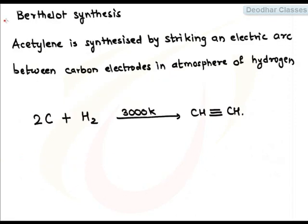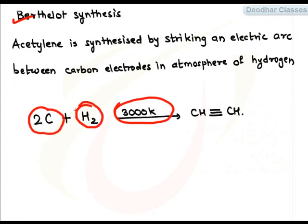Acetylene can be also obtained by Barthelot synthesis. Actually, this is step 1 of Barthelot synthesis. First, in Barthelot synthesis, an electric arc is struck between two graphite rods which are placed in the atmosphere of hydrogen. Carbon will react with hydrogen at very high temperature of 3000 Kelvin to form acetylene. And then this acetylene will undergo cyclic trimerization to form benzene. This is the complete Barthelot synthesis. The reaction that we are discussing here is just the initial part of Barthelot synthesis.